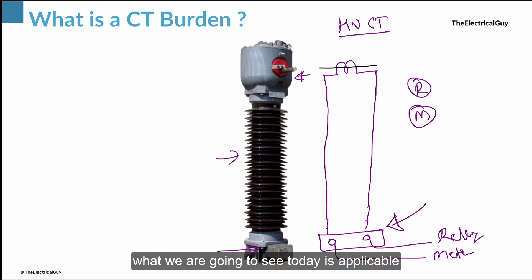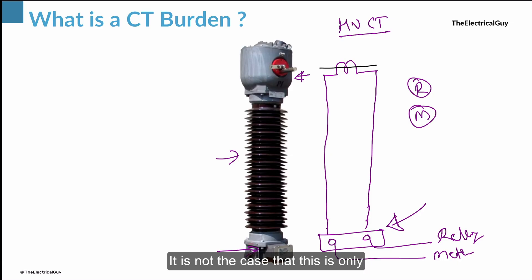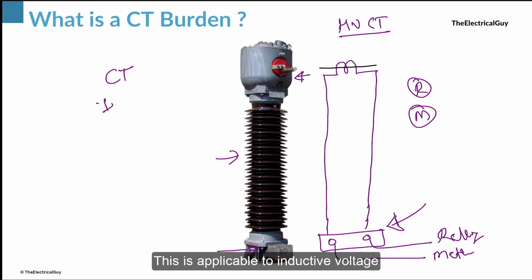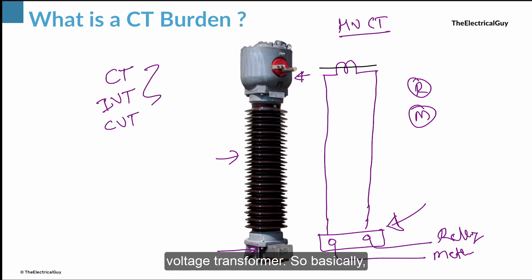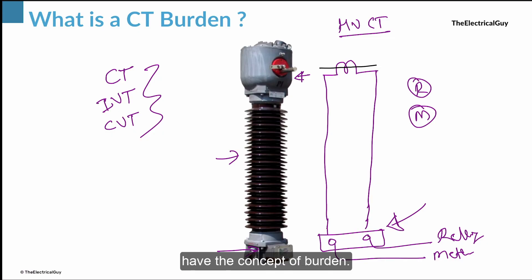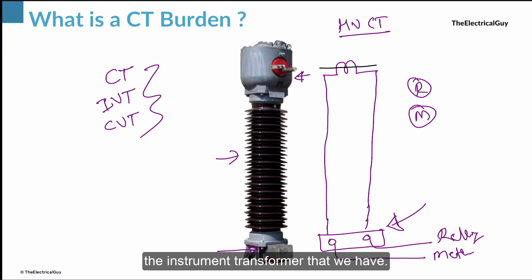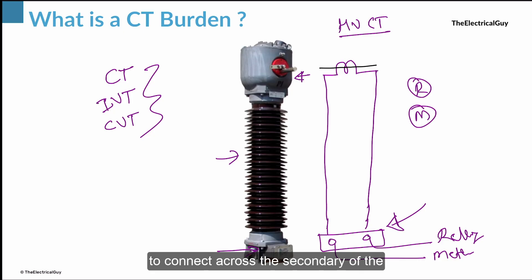This explanation is applicable for all instrument transformers — not only the current transformer. It is applicable to CT, to inductive voltage transformers, and also to capacitive voltage transformers. Basically, all instrument transformers have the concept of burden. In simple words, the burden is everything that we are going to connect across the secondary of the current transformer or any instrument transformer — it is essentially the total impedance.